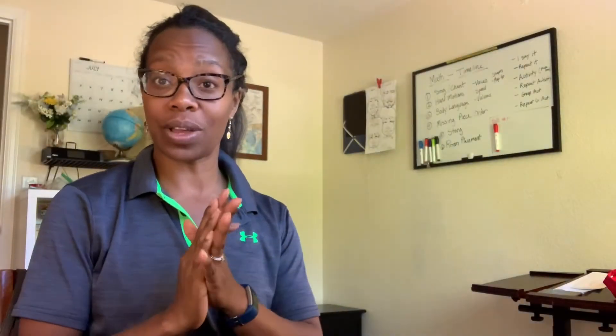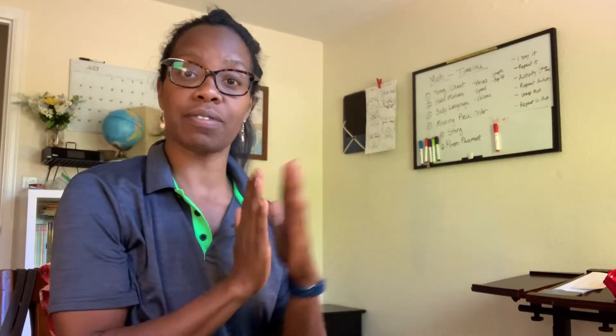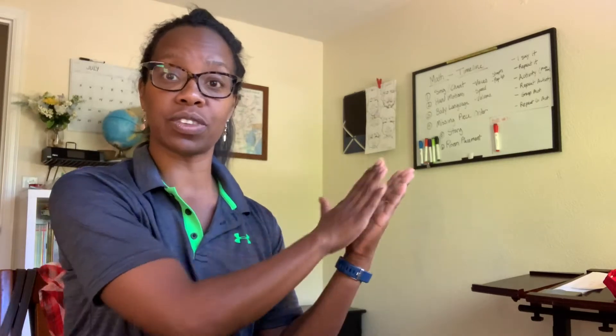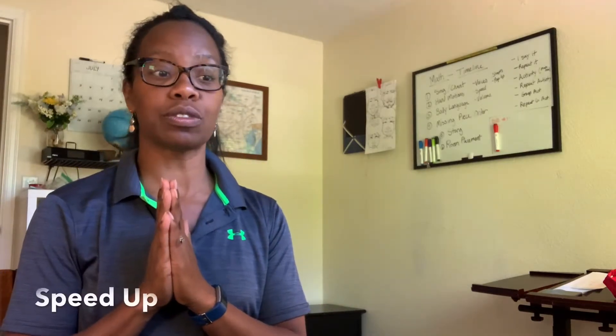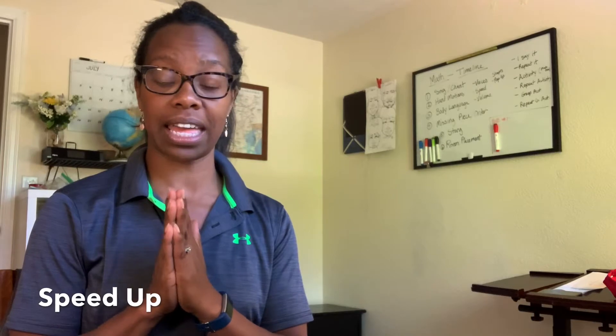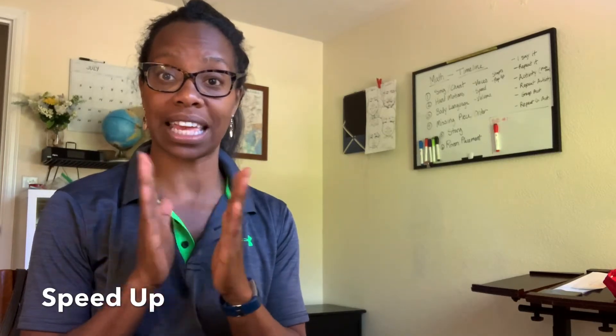Now we're going to say the full equation together — five times one is five, five times two is ten, and so on, all the way down to five times fifteen. And we're going to try to speed it up and say it as fast as we can.